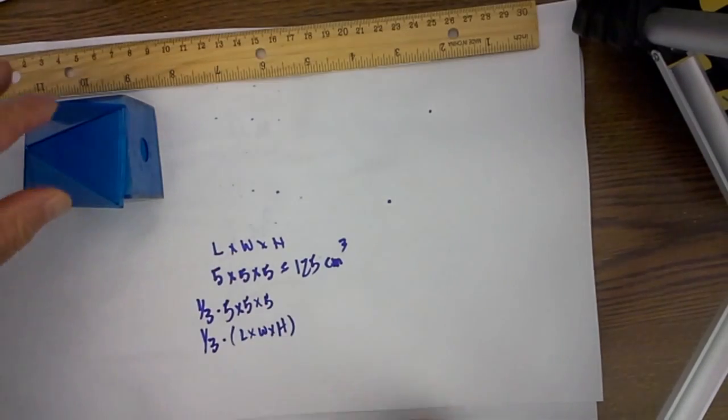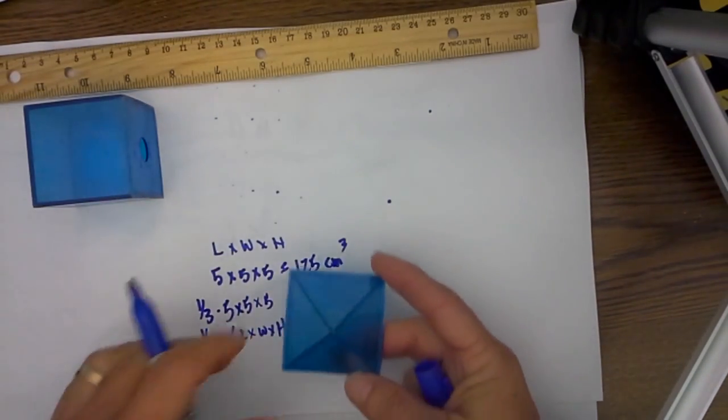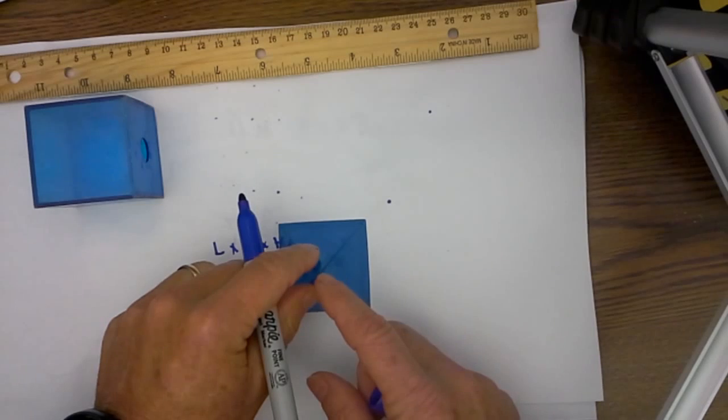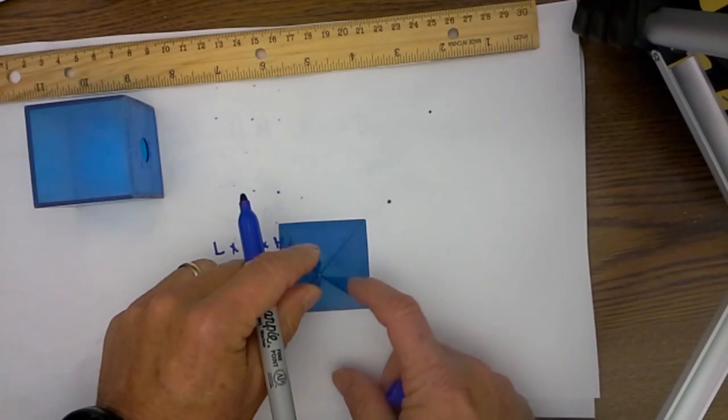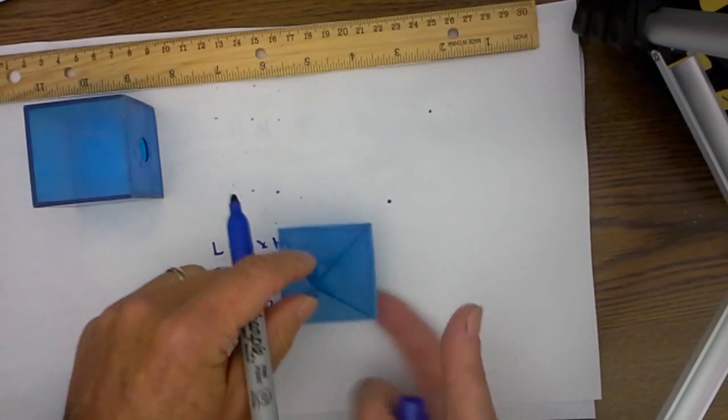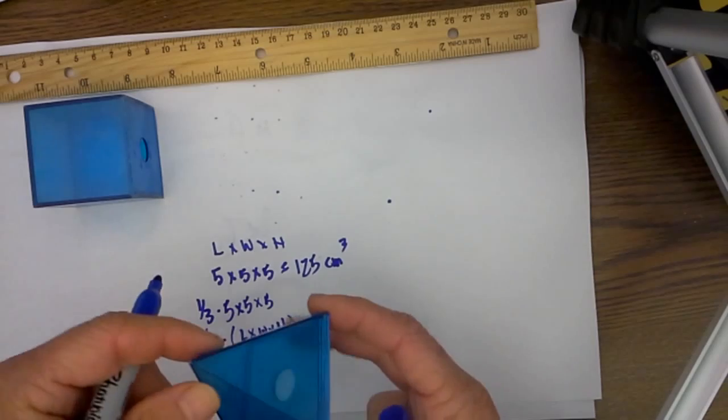Now remember one common mistake I see whenever we have a pyramid you want to use the slant height but instead it is the height from the base to the apex or the altitude.